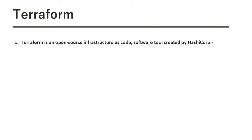When you are a customer of some cloud provider like AWS, Azure, or Google Cloud Platform, you need to create some resources to build your application. The resources can be anything — EC2 instances, S3 buckets, anything. One way to create those resources is by going to the web console and creating them manually, but that involves a lot of manual activity.